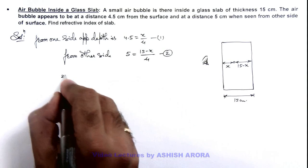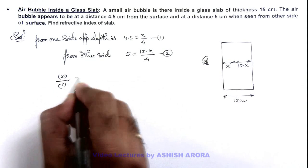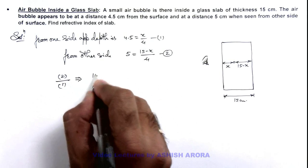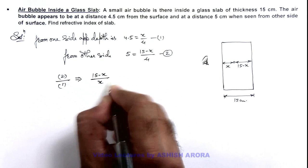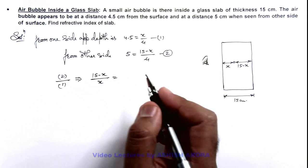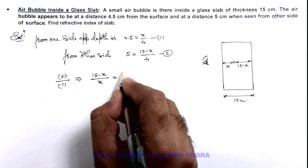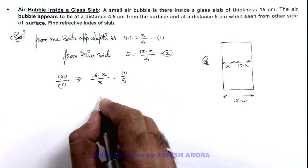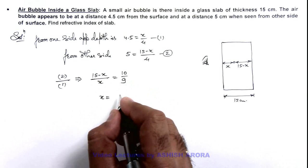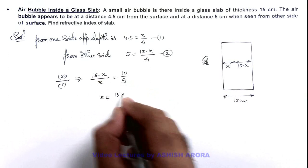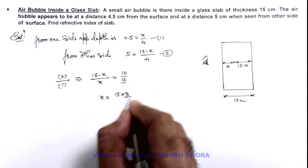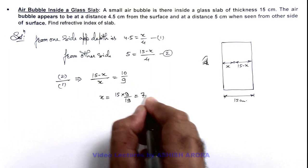If we solve 2 by 1, we are getting 15 minus x by x is equal to 5 by 4.5, this is 10 by 9. On further simplifying we are getting the value of x is equal to 15 multiplied by 9 by 19, that is 7.1.